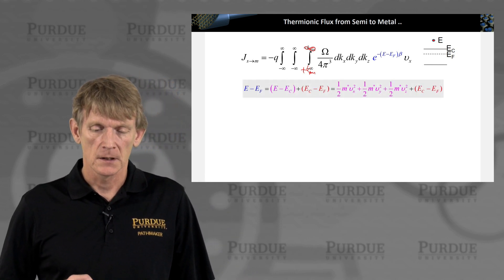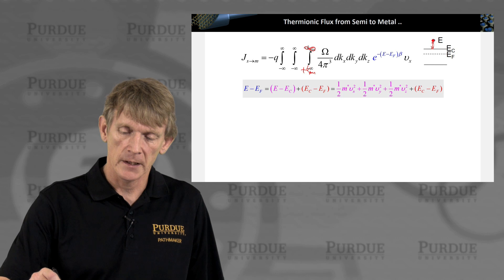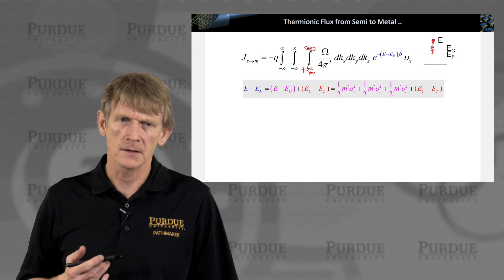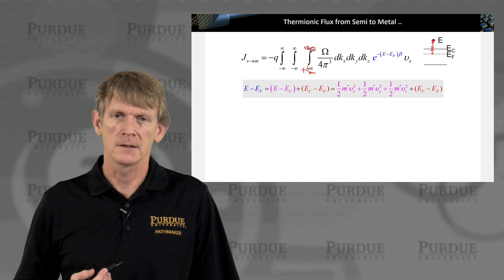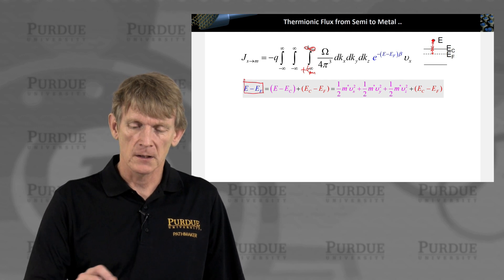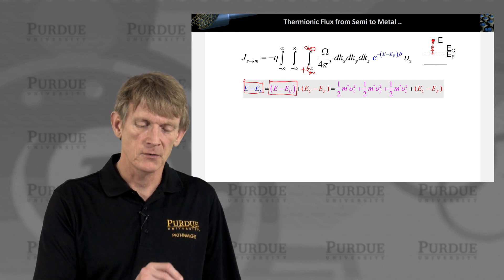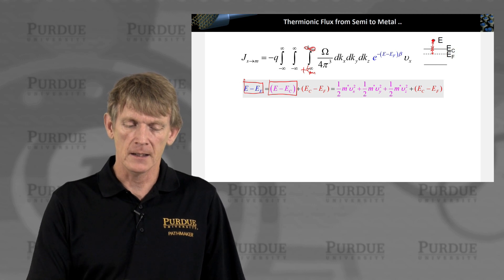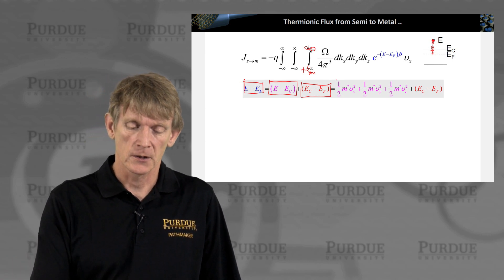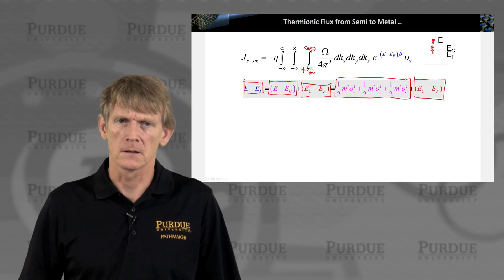Now we're expanding out this energy difference of the electron against the conduction band and then measuring it also against the Fermi level, because the Fermi level is something we can comprehend as an energy balance well into the depth of the semiconductor. We have an expression for the carrier distribution against the Fermi function, but we like to distinguish between the energy that is kinetic and the energy that is potential energy as measured from E_c to E_F. So we have a kinetic contribution and a static potential energy.